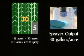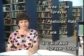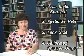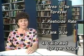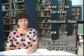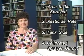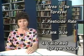Check your answer and then do problem number six. The mathematics involved in spraying is really not all that difficult, and knowing how to do these calculations properly can benefit you and the environment. When answering any calculation question, you really only need to know four pieces of information: one, the area to be sprayed; two, the pesticide rate; three, the tank size; and four, the calibrated sprayer output.